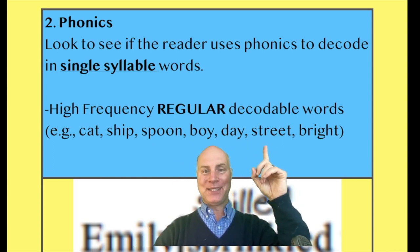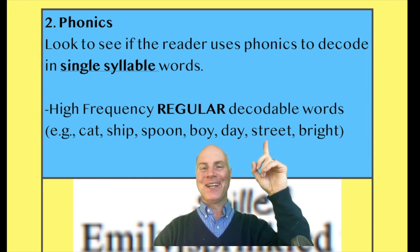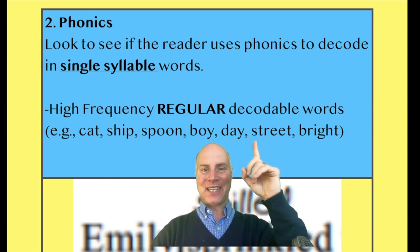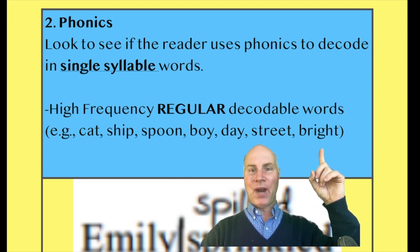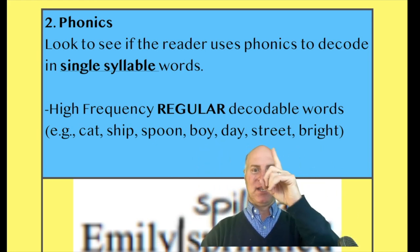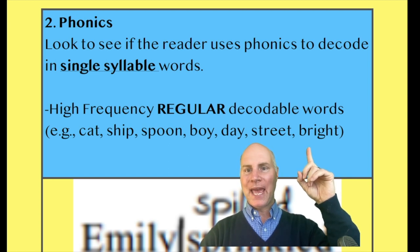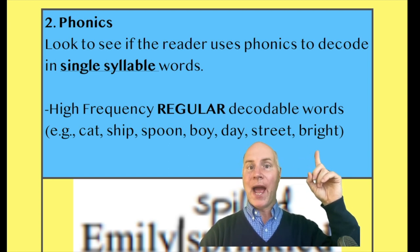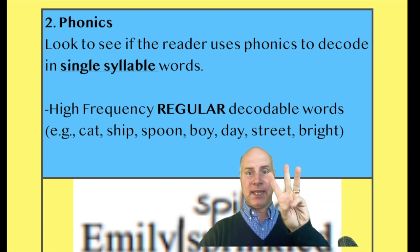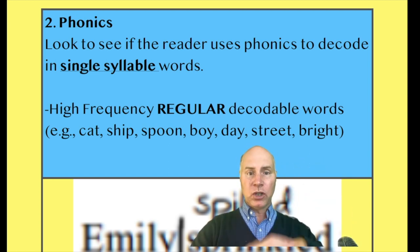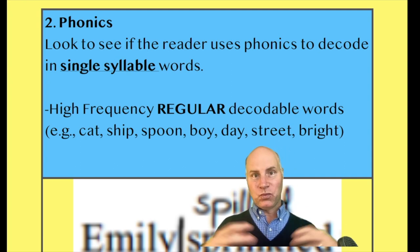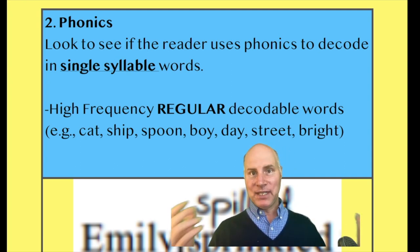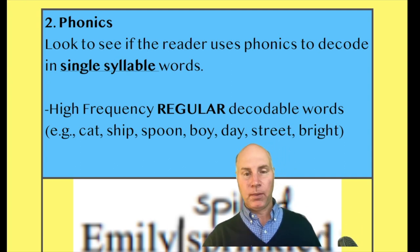In street, we have a consonant cluster and a vowel diagraph. In bright, we have a couple of things: we have a blend, BR, and we have a trigraph — three things that make one sound. Look at all those phonics patterns going on in these regular, everyday, single syllable words.